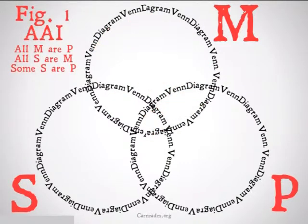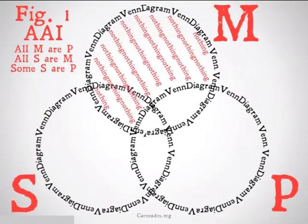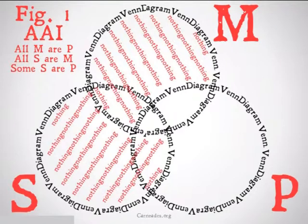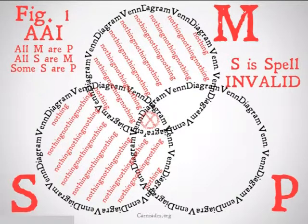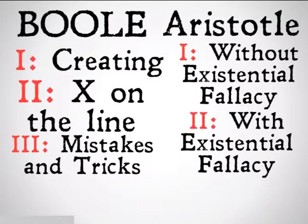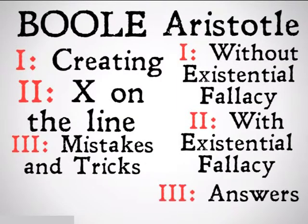Figure 1, A-A-I: All M are P, all S are M, therefore some S are P. It's not going to be valid for Boole. We're going to try it for Aristotle. We see that there's only one area available for S, so we're going to put a circled X there. However, S is going to be empty — spells don't exist. Therefore, this is going to be an invalid argument. That was Aristotle with the existential fallacy.